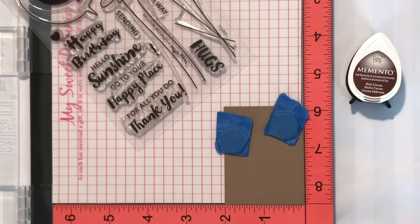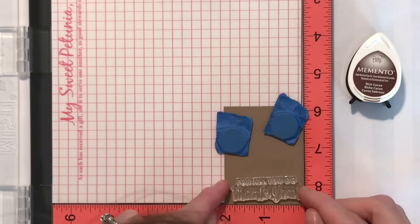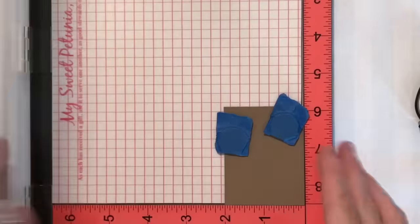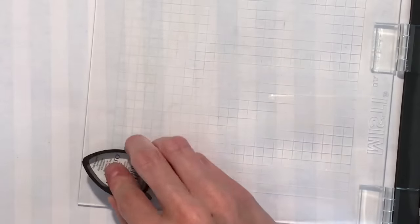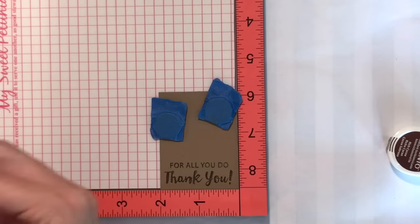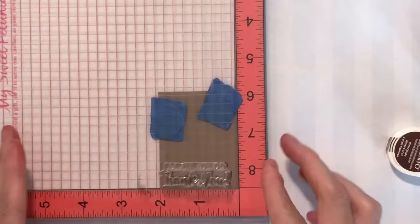I have the balloon messages stamp set there. I pulled off a sentiment, a thank you sentiment, and I'm positioning it on a scrap of craft paper. I'm going to stamp it with that Memento Rich Cocoa color. And I'm using my MISTI here because I am going to stamp it twice so I have a nice crisp sentiment. I stamped it twice there.